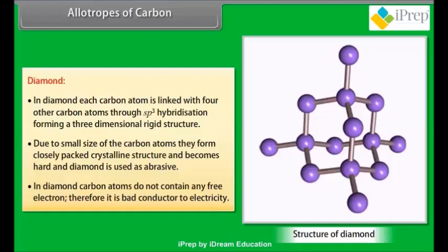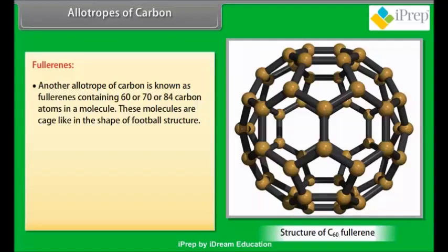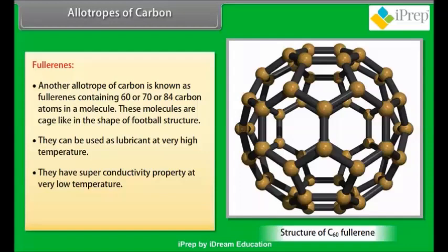Fullerenes: another allotrope of carbon is known as fullerenes containing 60 or 70 or 84 carbon atoms in a molecule. These molecules are cage-like in the shape of football structure. They can be used as lubricant at very high temperature. They have superconductivity property at very low temperature. They find use in the preparation of weightless fiber of high tensile strength.